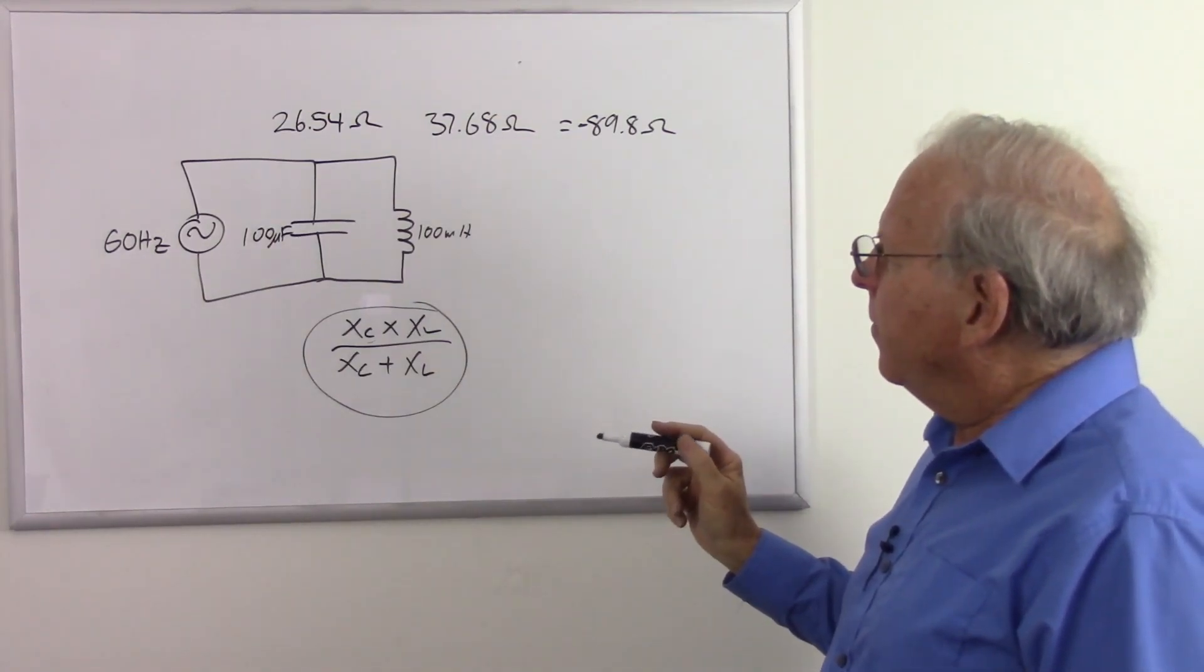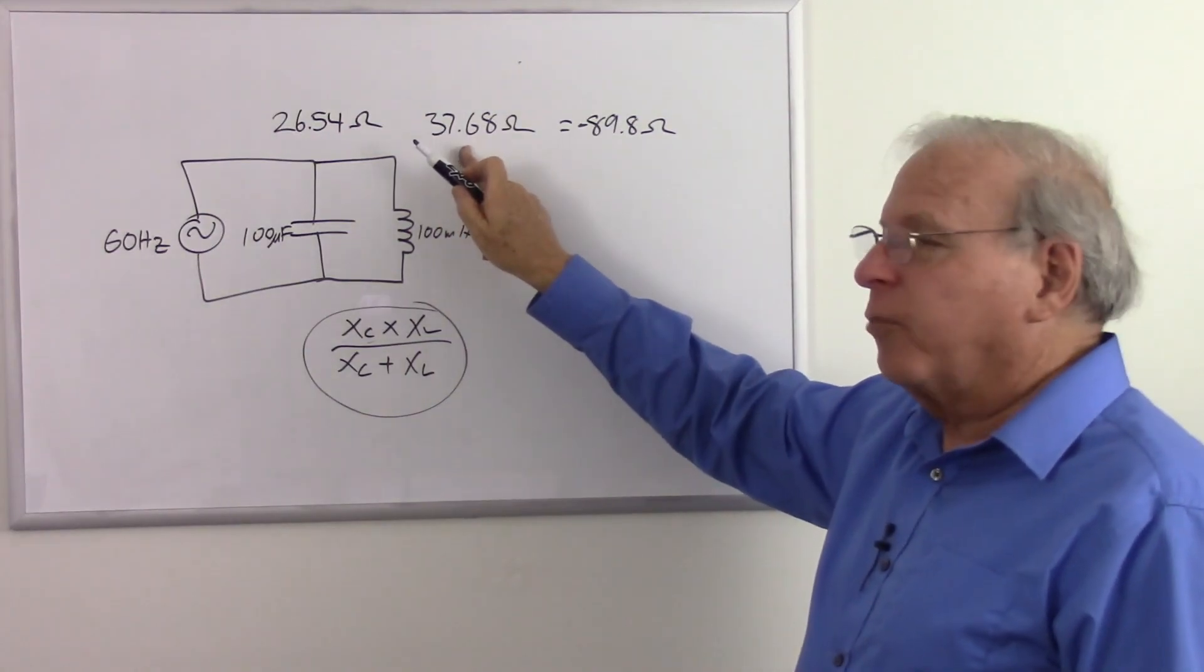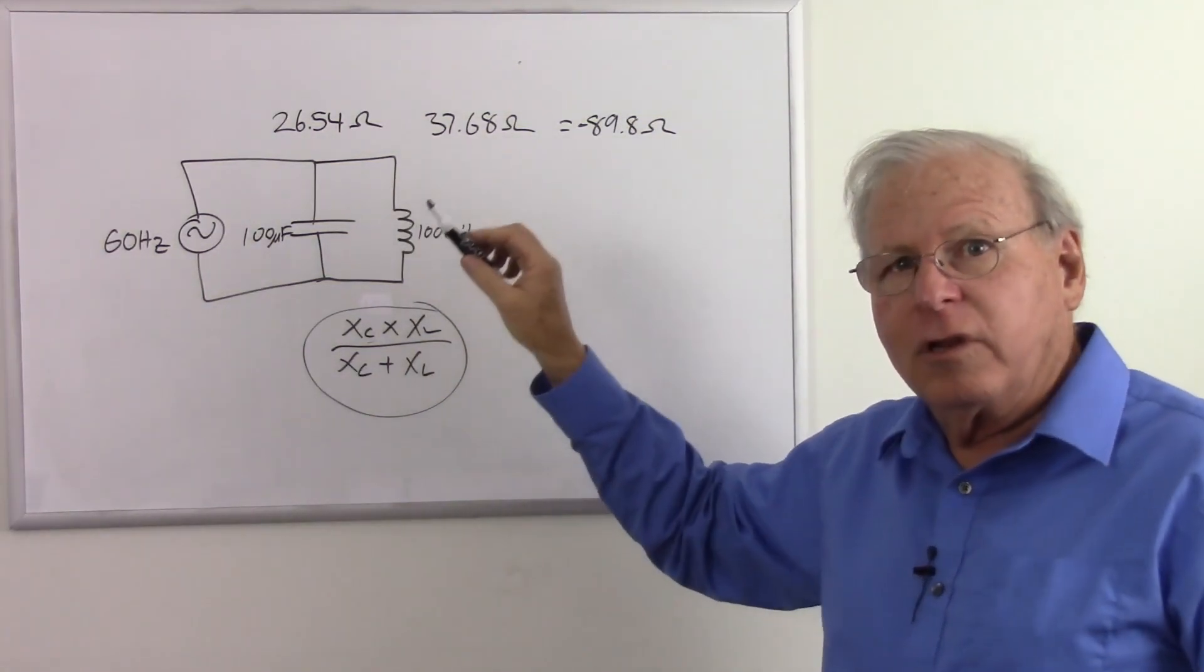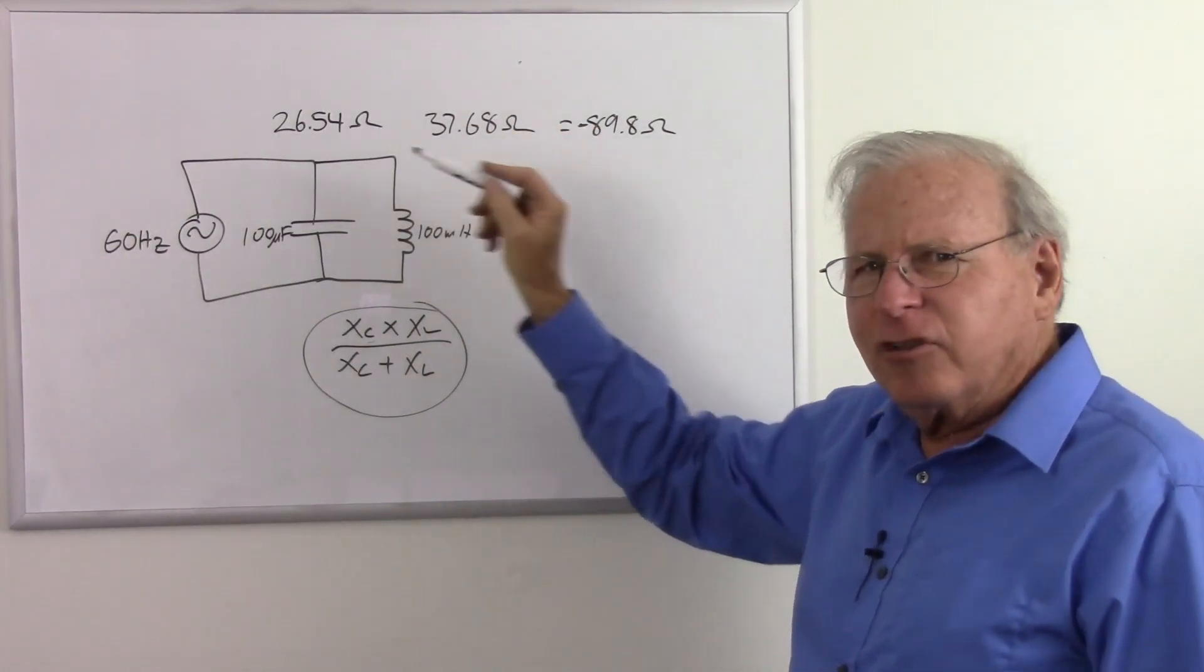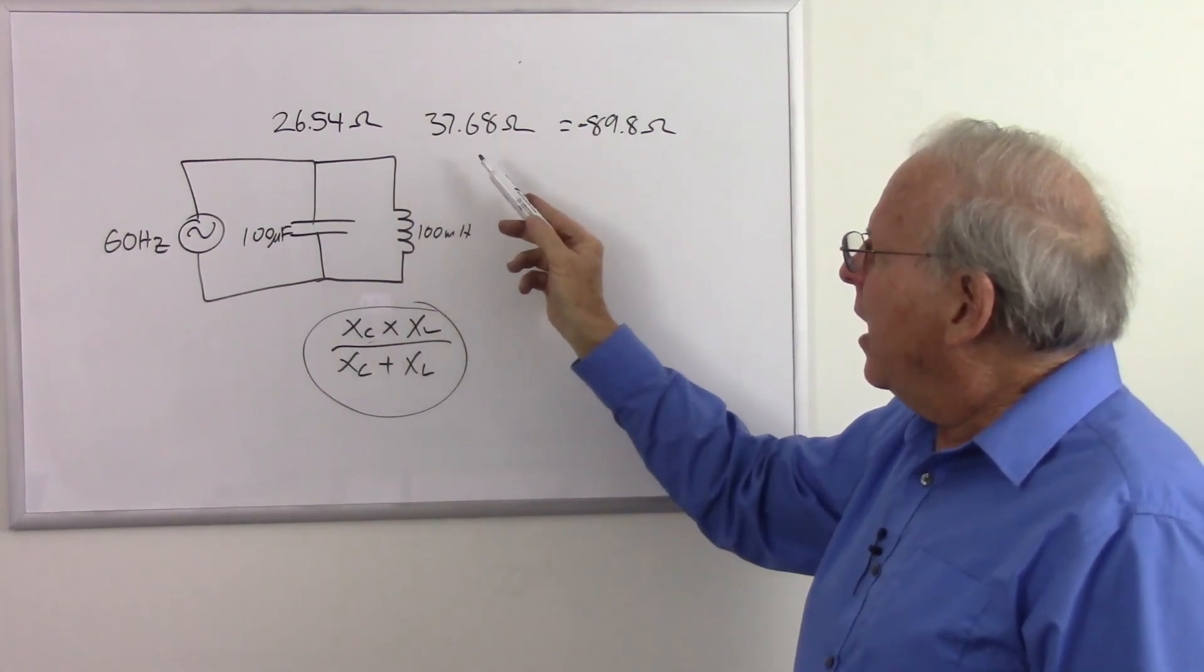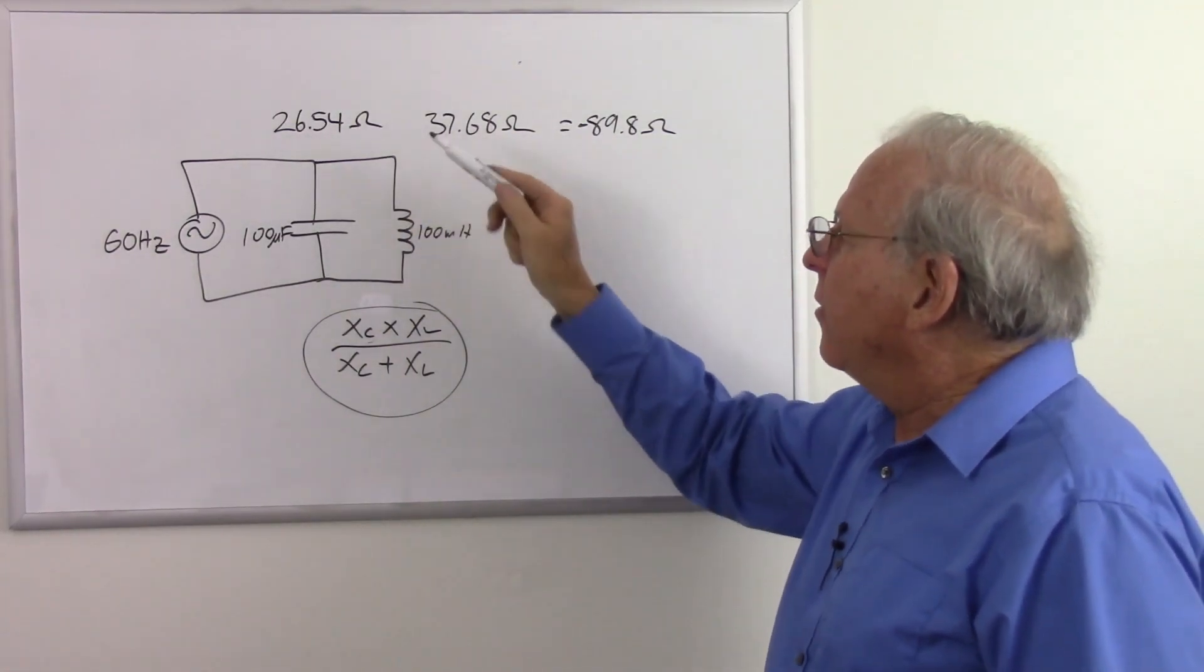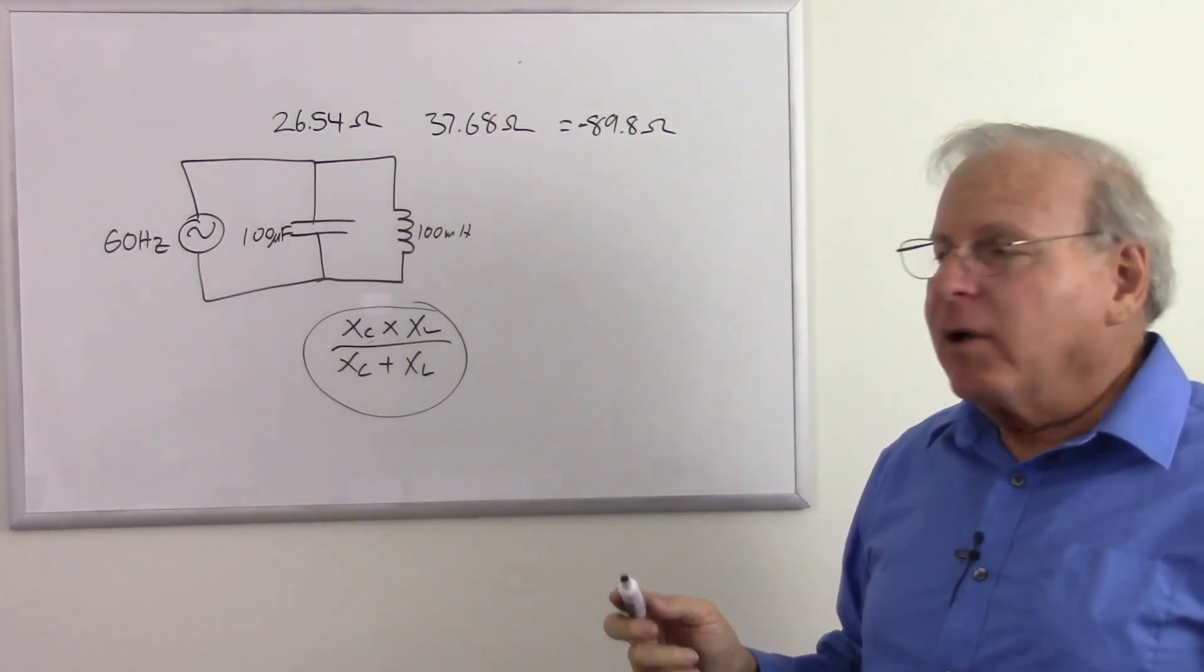But wait a second, if this is 26.54 ohms, and that's 37.68 ohms, isn't the rule for parallel circuits that the total resistance is going to be something less than your lowest resistor, and shouldn't that work for this too? How did I get a higher impedance than either of those components? And you look at that and you think, can that be right?